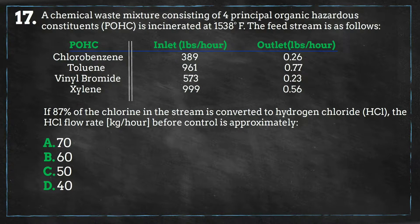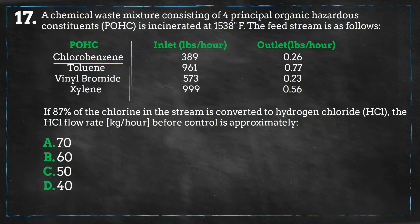Looking at our question, we are calculating the flow rate of hydrogen chloride which was converted from 87% of the chlorine in the feed stream. Looking at what's in our waste stream, only one of the constituents has chlorine in it, which is chlorobenzene. This will be the focus of our calculations.